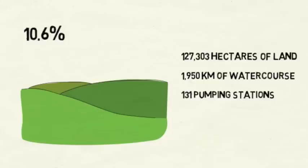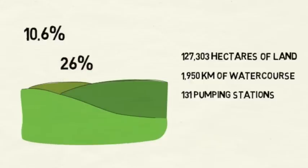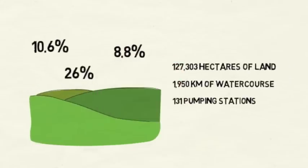This represents 10.6% of low lying land in England, 26% of IDB pumping stations, and 8.8% of the total watercourses within IDBs.